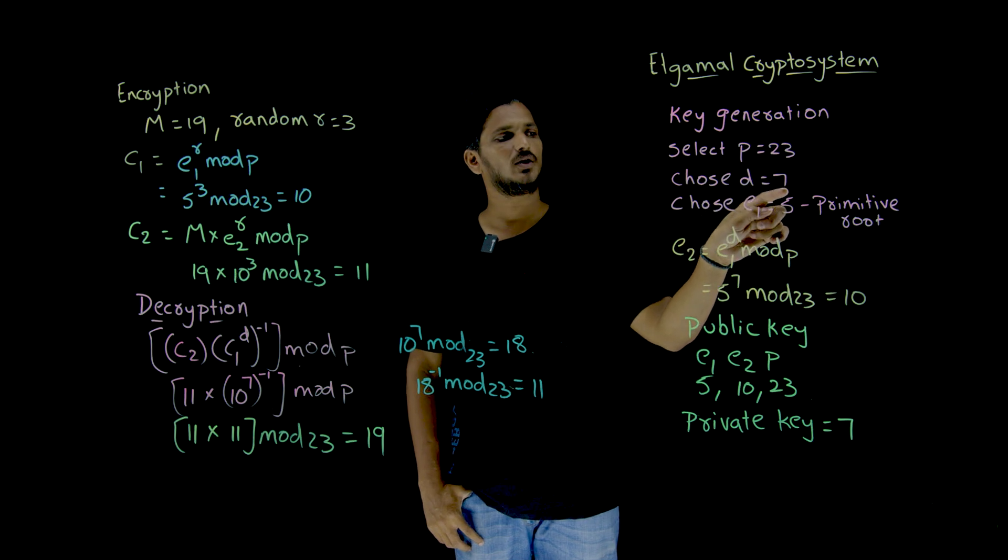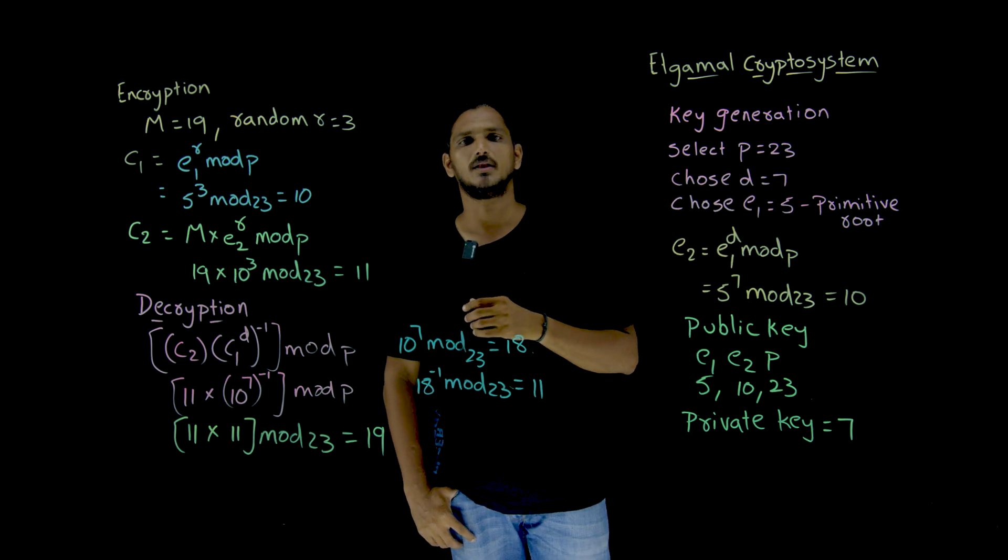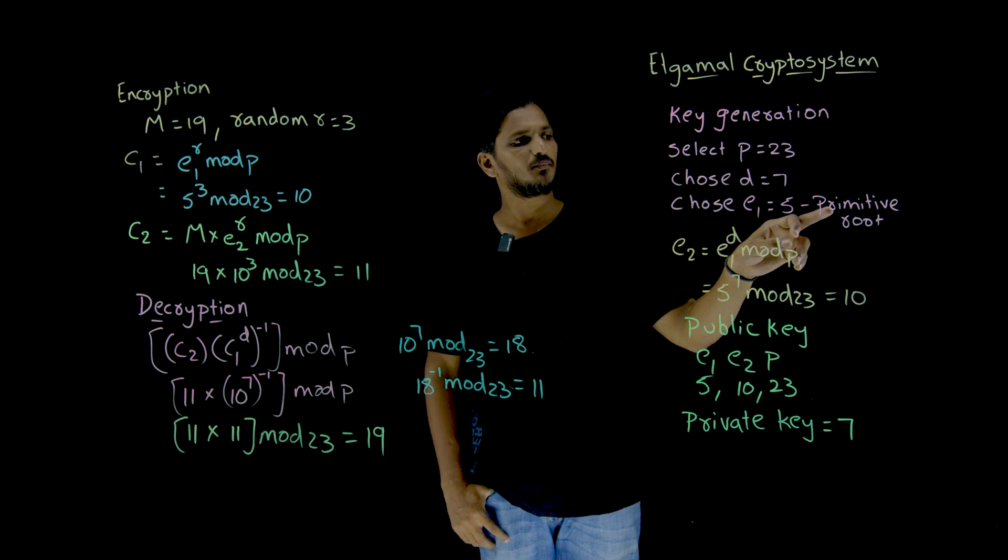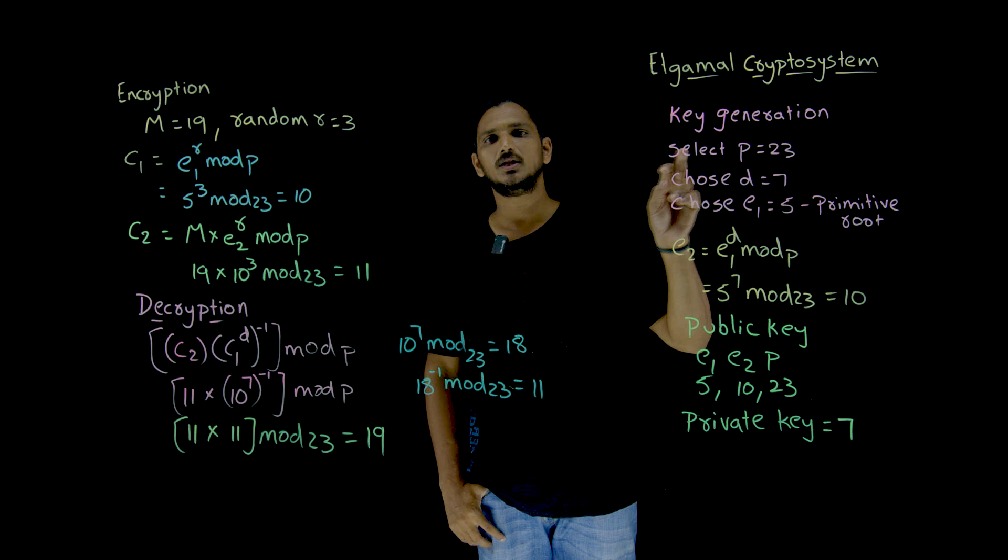We call it as D. Randomly, we generated 7. You can generate any number. And we have to choose E1. E1 is a primitive root of Z23 star.